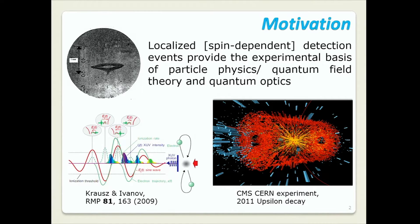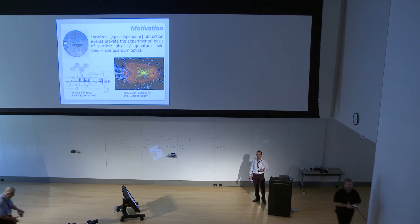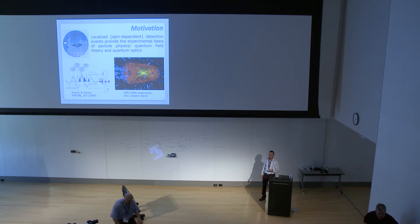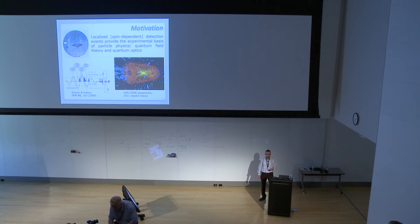So localization is an embarrassing topic in relativity. Yes, localized and spin dependent events and detections are the experimental basis of quantum field theory in particle physics and quantum optics. On the other hand we do have problems or at least issues if we try to characterize localization, and part of my work for last few years was trying to understand this picture better.